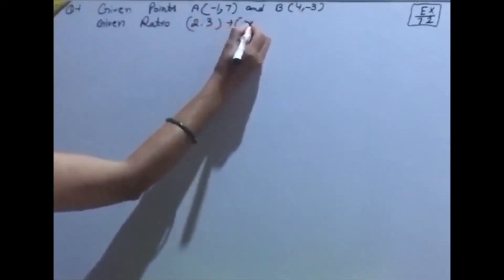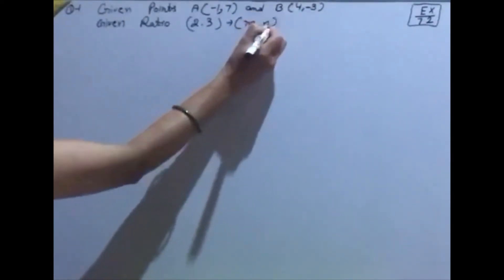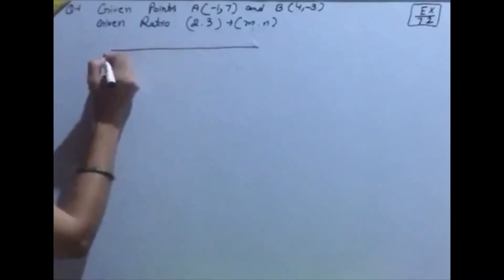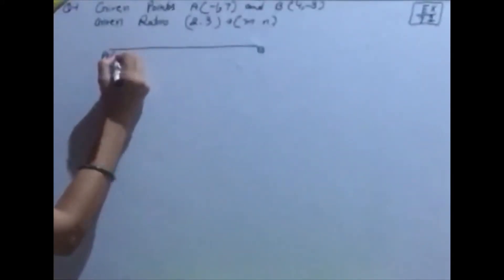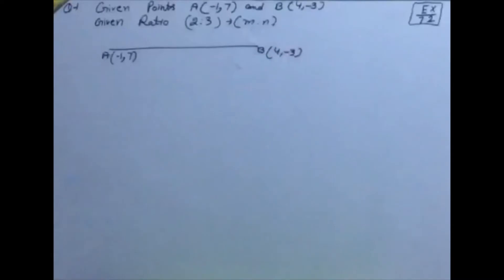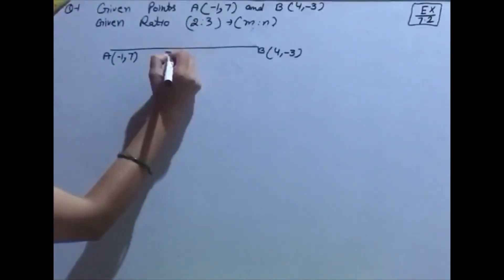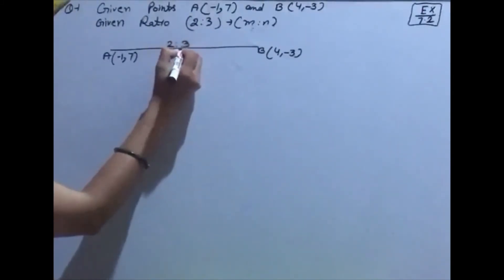यह हमारे पास M ratio N है। हमारे पास line होती है coordinate points की। इसमें एक line, A point और B point यहाँ draw करेंगे। A is (-1, 7), B is (4, -3), और ratio है M ratio N यानि 2 ratio 3।